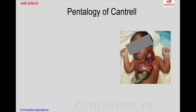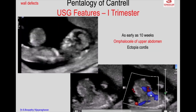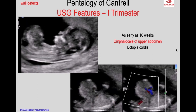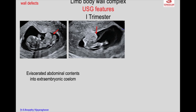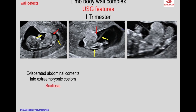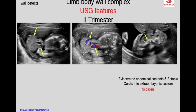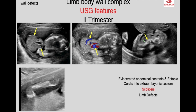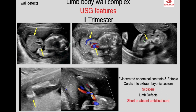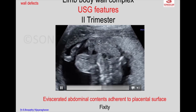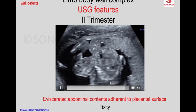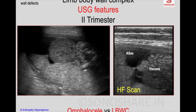Pentalogy of Cantrell shows omphalocele and ectopic heart, confirmed on both grayscale and color Doppler. The bowel herniates outside the amniotic sac into the extraembryonic coelom. You also see scoliosis of the spine, limb defects, and an amniotic membrane. The cord is very short and the eviscerated contents are fixed while the rest of the fetus moves — this fixity is the crucial differentiating feature.